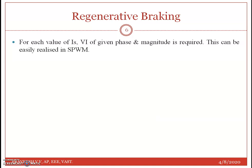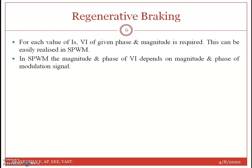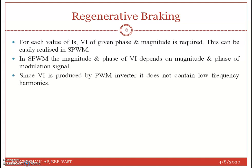For each value of IS, that is the supply current, a VI of given phase and magnitude is required. This can be easily realized using sinusoidal pulse width modulation (SPWM) by adjusting the magnitude and phase of the modulation signal. Since VI is produced by the PWM inverter, it does not contain low frequency harmonics.